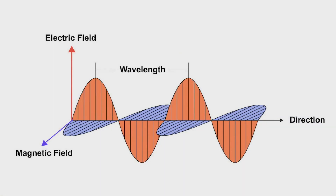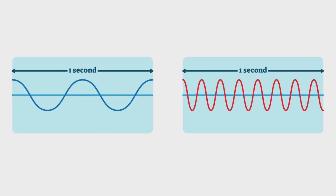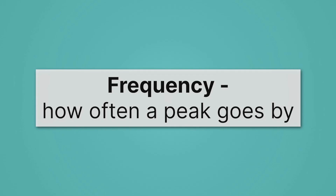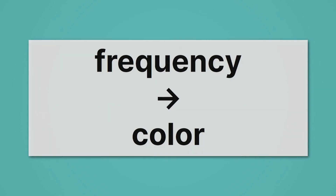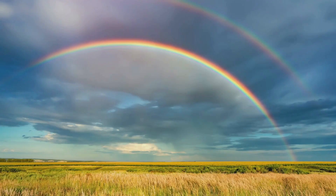Let's go back to our picture of light. It's moving, and so there are a bunch of peaks moving by us. How many peaks go by in a second is known as the frequency. On the left we have a low-frequency wave, and on the right a high-frequency wave. Recall that frequency is just how often a peak goes by. And frequency, just like wavelength, determines color — they're kind of two sides of a coin. If I determine frequency, I'm also picking an exact wavelength. Together, they determine color. When I look at a rainbow of different colors, I know that each color is going to have a specific frequency and a specific wavelength.